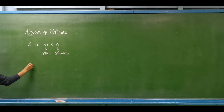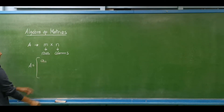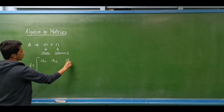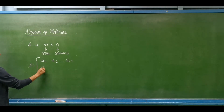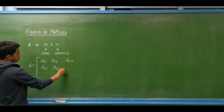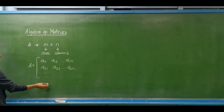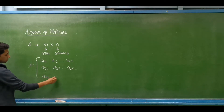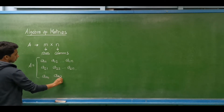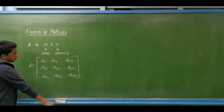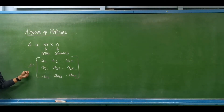To write the elements of matrix A, we have A₁₁ for the first row, first column; A₁₂ for the first row, second column; up to A₁ₙ for the first row, n-th column. Then A₂₁ for the second row, first column; A₂₂ for the second row, second column; up to A₂ₙ. Proceeding to the last row, we have Aₘ₁, Aₘ₂, up to the last element Aₘₙ. These are the elements of matrix A.